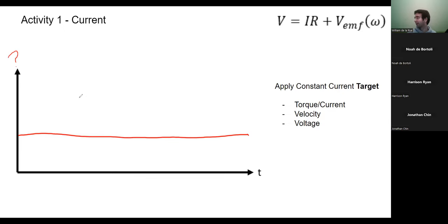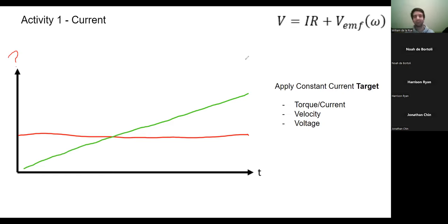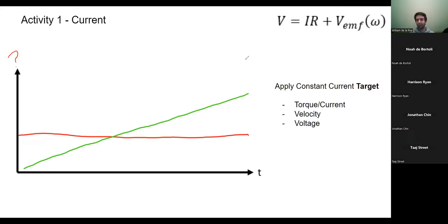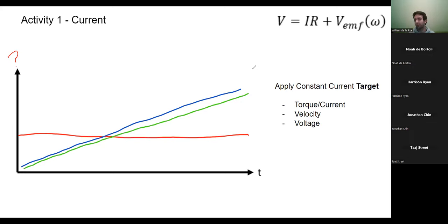Correct - it'll increase. If the load is zero, how will velocity increase? Linear, right. So red is the torque, and then our velocity is going to increase linearly. If the velocity is increasing linearly, what is happening to the voltage we need to apply to maintain that constant torque? It's increasing - linearly - because the back EMF is proportional to the velocity. Bang on.